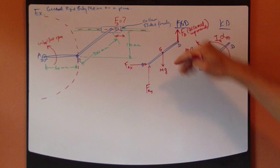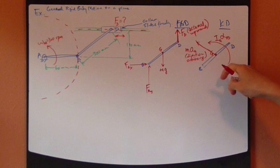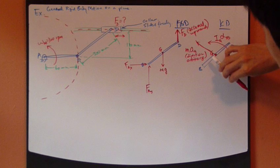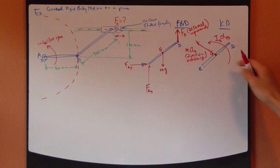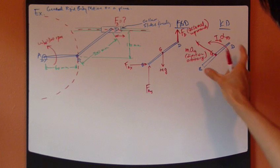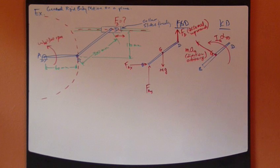It goes clockwise. So this point A cannot go opposite of that. It can't go down this way. You have to go along with the sense of your assumed alpha direction.